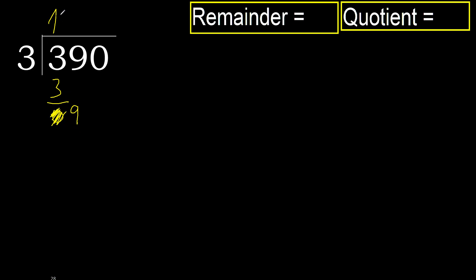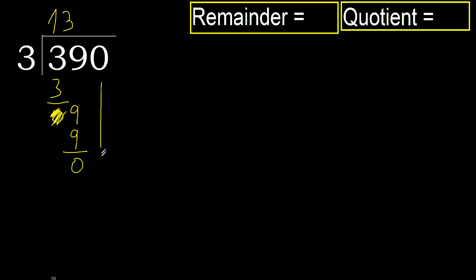3 multiplied by 3 is 9, which is not greater. 9 minus 9 is 0. Next, eliminate 0 on this side.